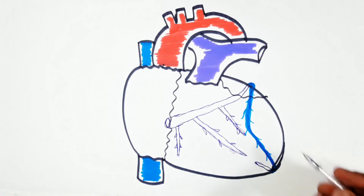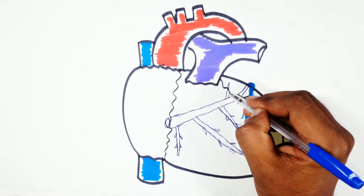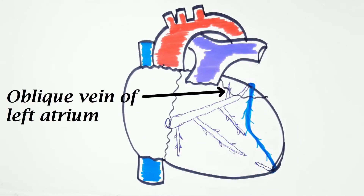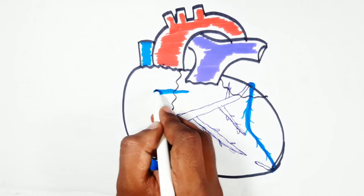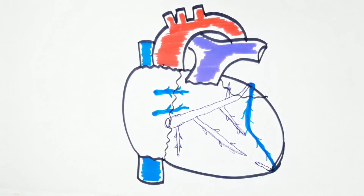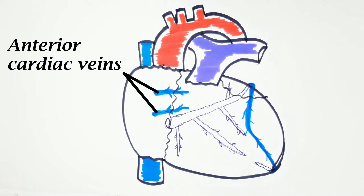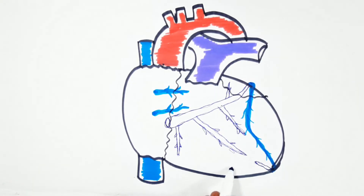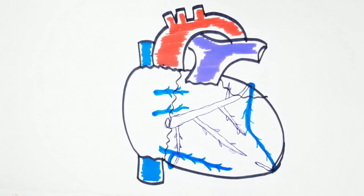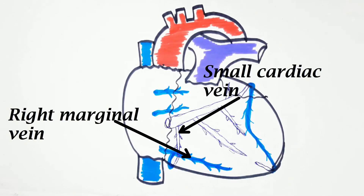The fifth is the oblique vein of the left atrium, a small vessel that runs downwards to open into the coronary sinus near its left end. There are also a series of parallel veins on the anterior surface of the heart that open into the right atrium directly; these are called the anterior cardiac veins. The right marginal vein runs to the right along the inferior margin of the heart, and may join the small cardiac vein or drain directly into the right atrium in the manner of an anterior cardiac vein.